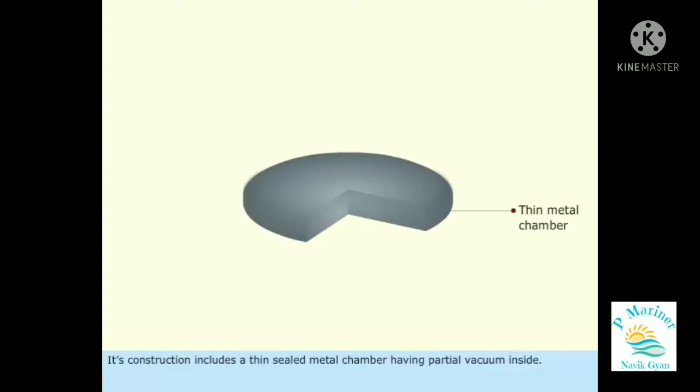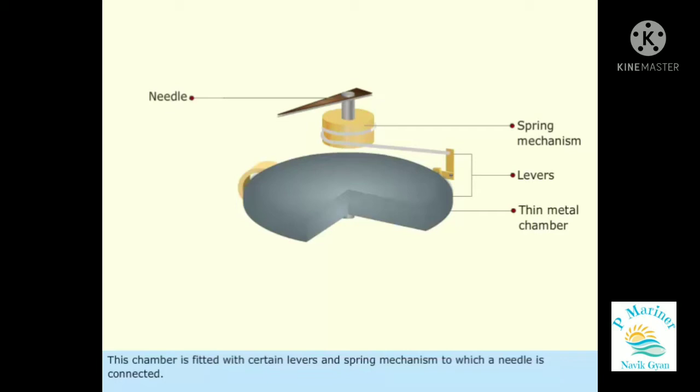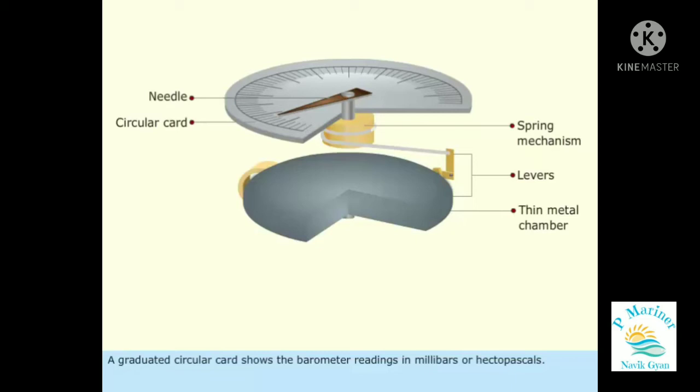This chamber is fitted with certain levers and spring mechanism to which a needle is connected. A graduated circular card shows the barometer readings in millibars or hectopascals. The whole assembly is enclosed in a metal casing.